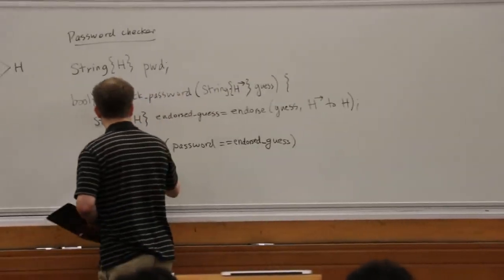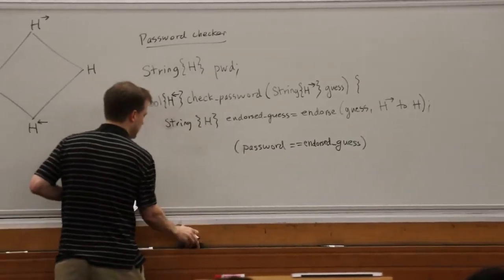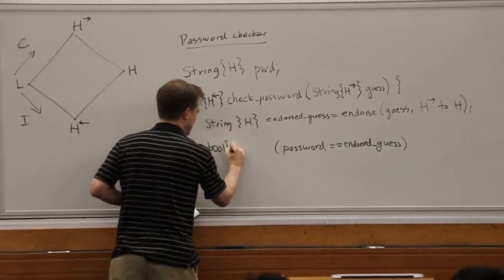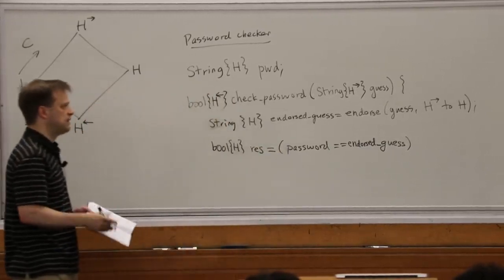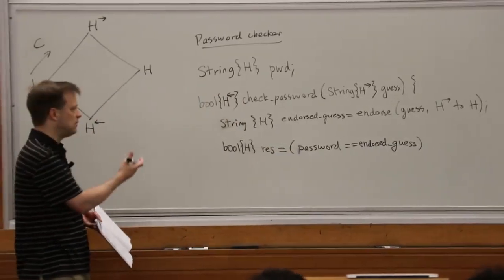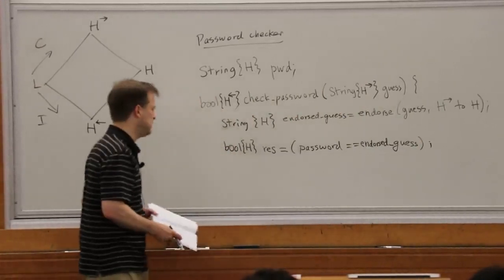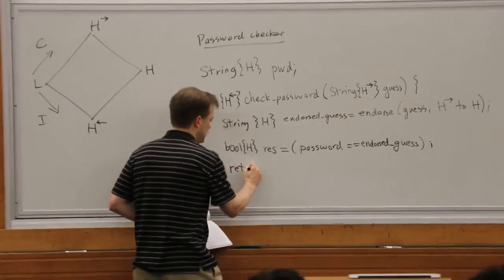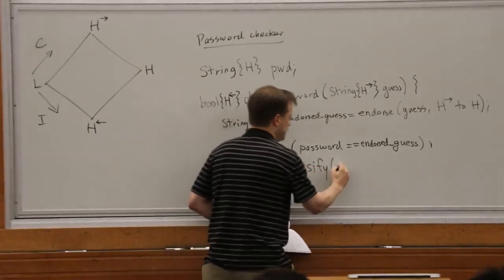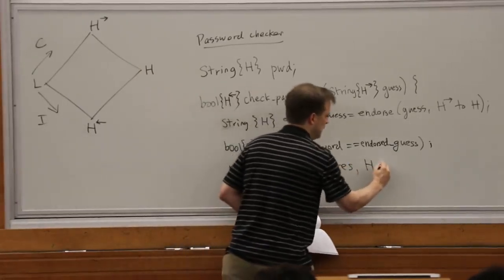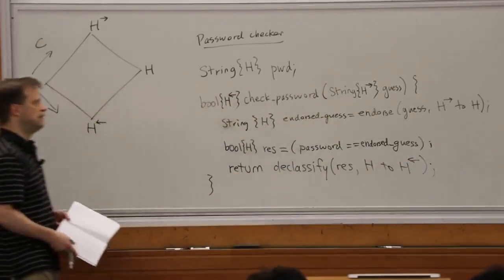Now let's set the result. The result is going to be the comparison of these two things. It's still not releasable yet because we haven't done any declassification. And so now we can return the result of declassifying this result from h to h-left-arrow.